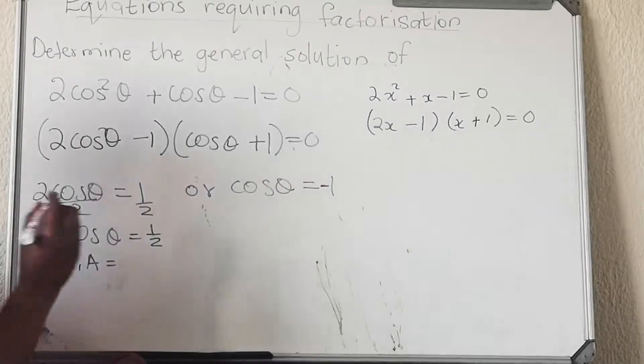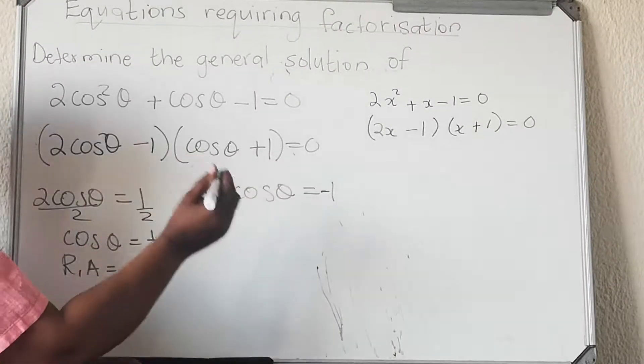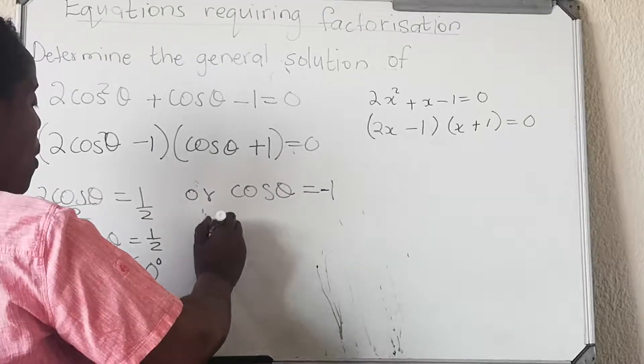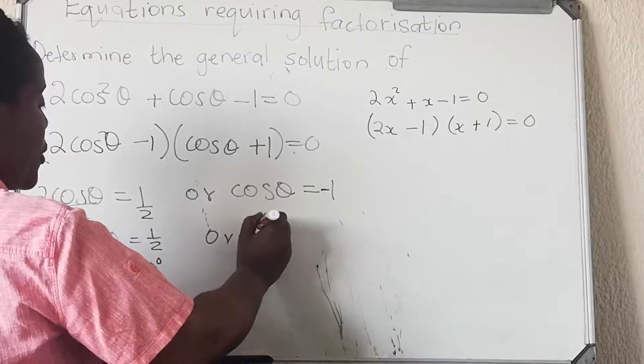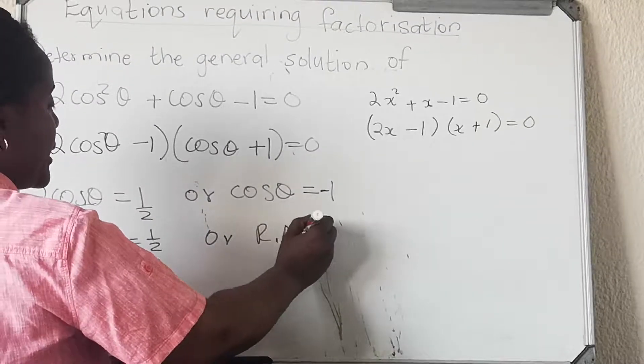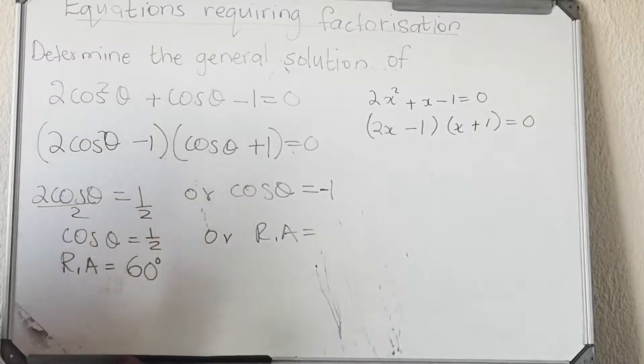You find that your reference angle - let's take our calculator and see - your reference angle is 60 degrees. And then this side, your reference angle this side equals 180 degrees.